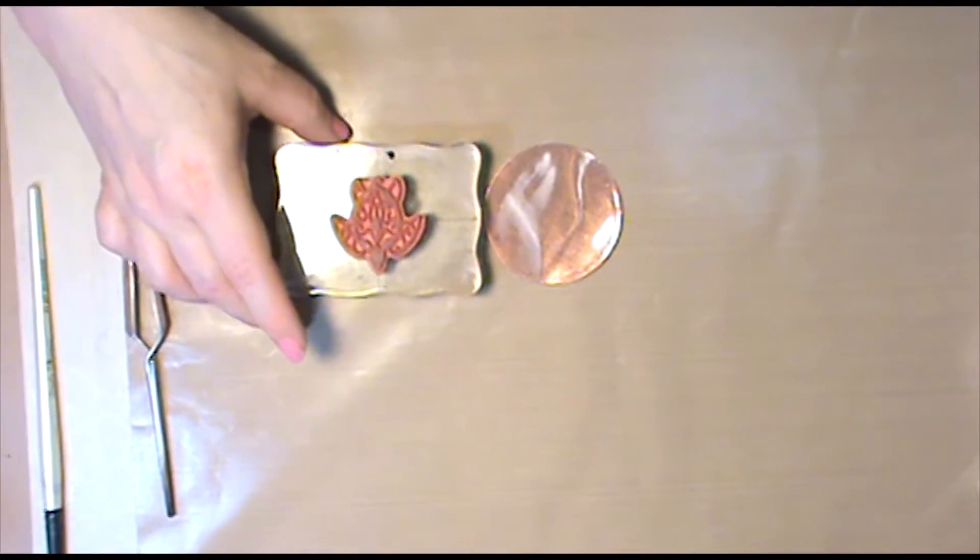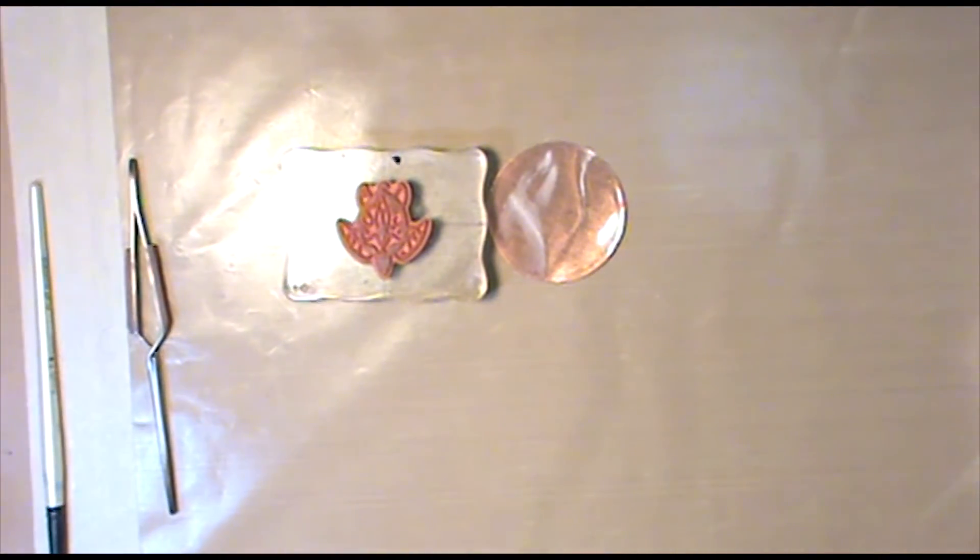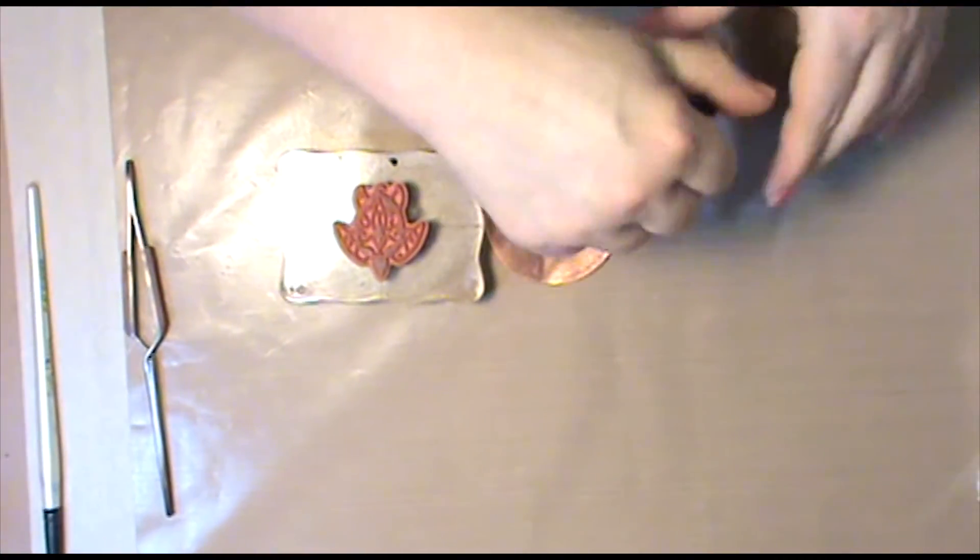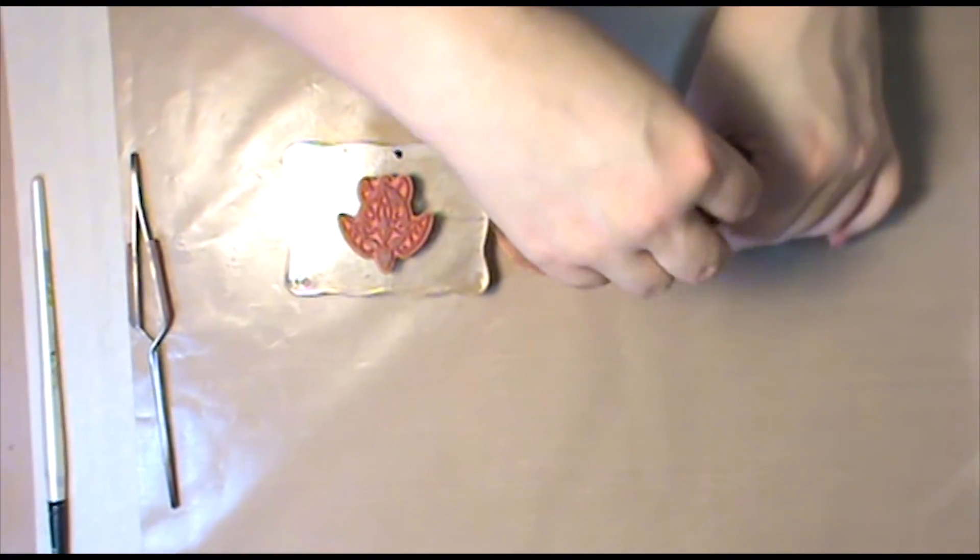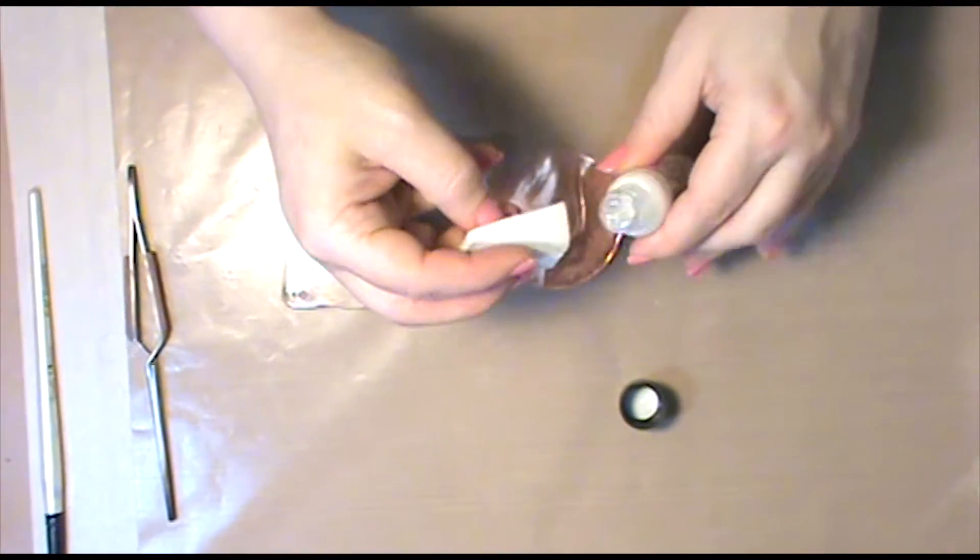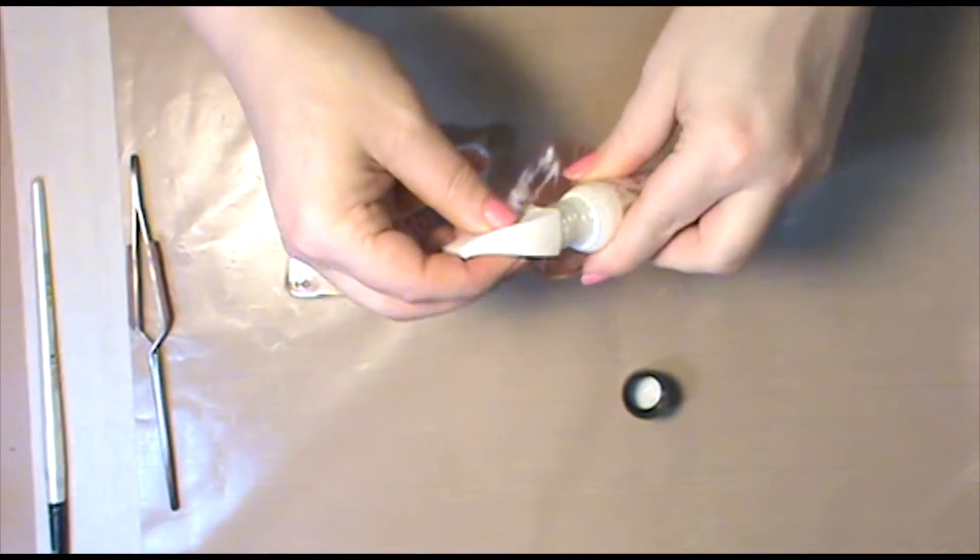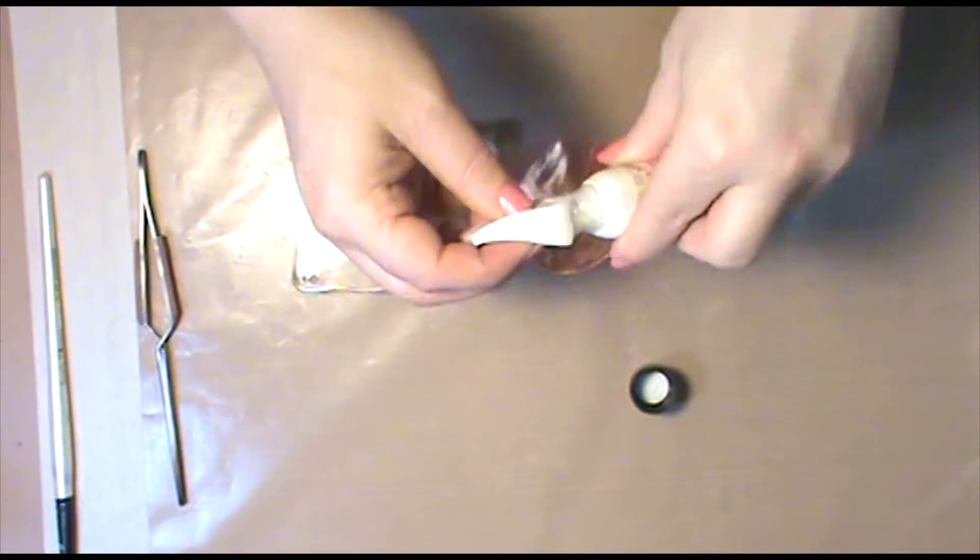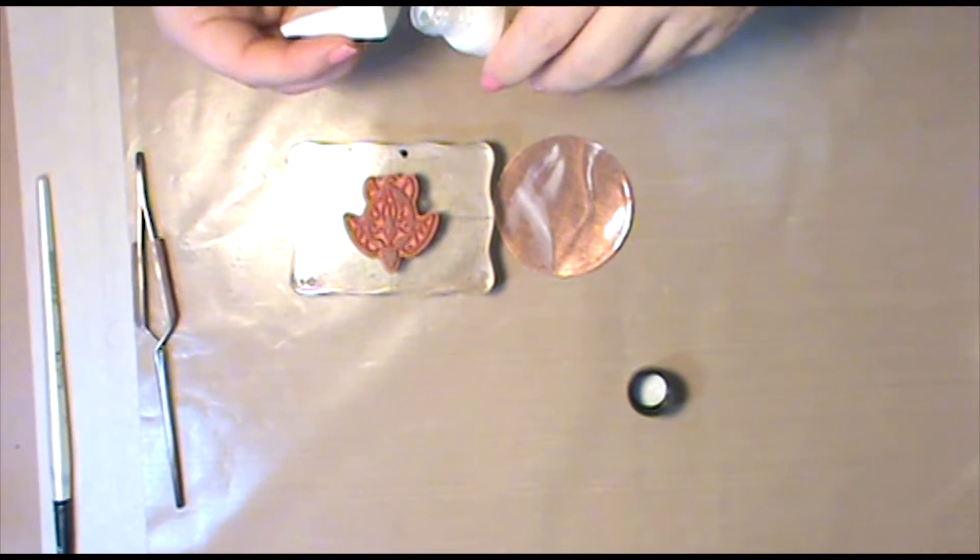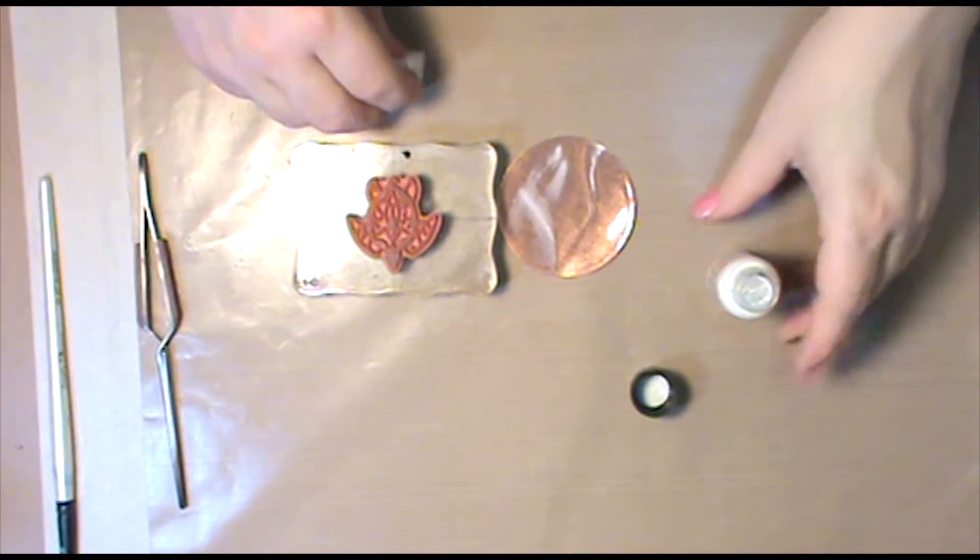Once you've selected your stamped image, and I'm using this gorgeous sea turtle design by Inkadinkadoo, you want to apply a small amount of your SLK Iced Enamels Medium to a makeup sponge or brush and dab it onto the image. It doesn't take a lot. You just want to get the medium on the raised surface of the stamp and not sloshing down into the crevices because that will give you a really goopy and blurry image.